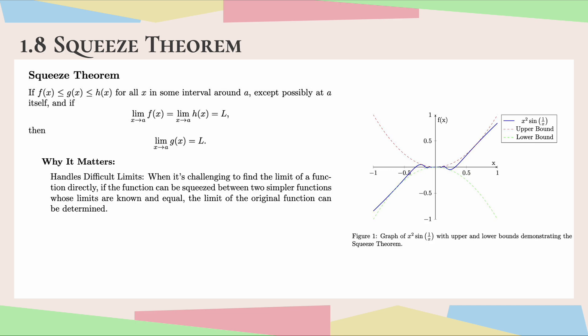So first things first, what is it and what does it tell us? You can kind of see over here in the image on the right — basically what happens is that some functions are hard to take the limit of. For example, in the case of our graph over here on the right, it's a little bit hard to see, but it actually oscillates around zero, so we could not take the limit directly as x approaches zero.